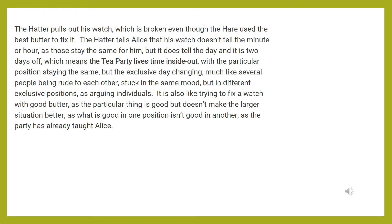Just as Alice says she has never been to a stupider party, she finds a door in a tree that leads back to the hall with a glass table, and she now has the tools to solve the puzzle and get into the Queen of Hearts' garden. In the end, Alice similarly declares everything stupid before rising up and breaking out of her dream. As she grows, she begins pushing back against those who don't make sense to her — like adults sadly do — and so she is ready for croquet with the Queen.